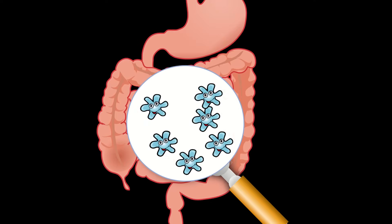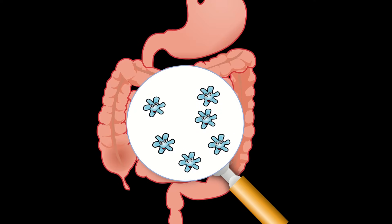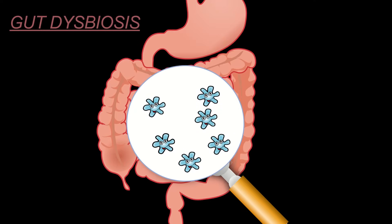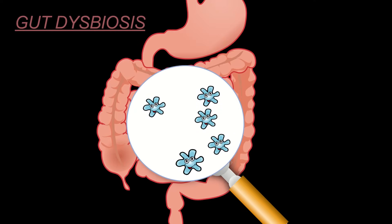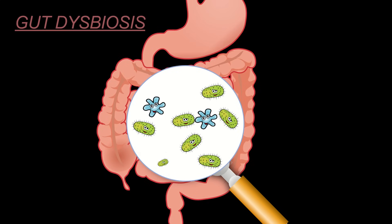Dysbiosis is a state of imbalance in the community of microbes in the gut. In this state, the composition of gut microbes changes, the diversity goes down, and there is an increase in the number of bad bacterial strains. Removal or elimination of ultra-processed food, outside food and your trigger foods will further prevent the growth and proliferation of these bad guys in your gut.